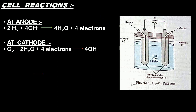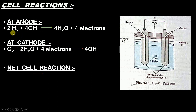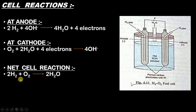For the net cell reaction, we simply add the reaction at the anode and the reaction at the cathode. After adding both equations, we are left with 2 H2 + O2 giving 2 H2O. This is nothing but a combustion reaction — the combustion of our fuel, H2.